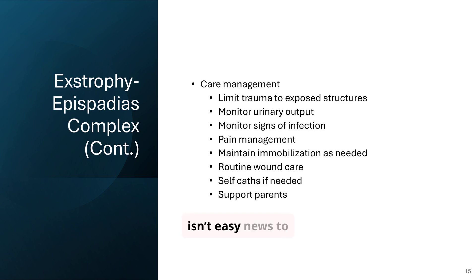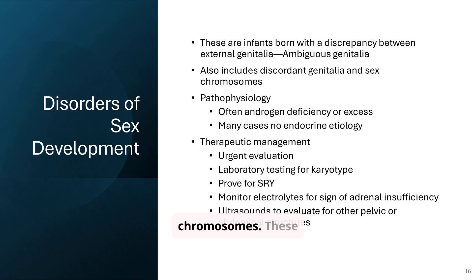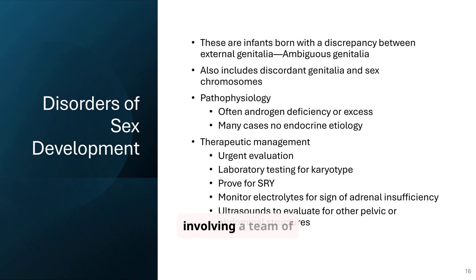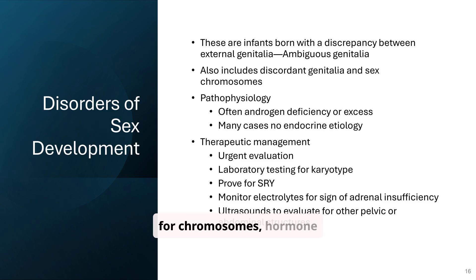Disorders of sex development involve discrepancies between external genitalia and sex chromosomes. These conditions require careful evaluation and management, often involving a team of specialists. DSD may show up as ambiguous genitalia at birth. It's crucial not to rush gender assignment — testing for chromosomes, hormone levels, and imaging comes first. A multidisciplinary team guides the family through the process.